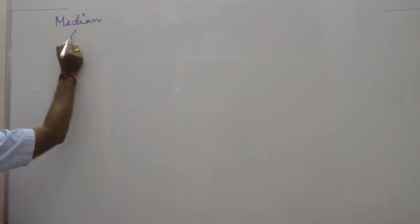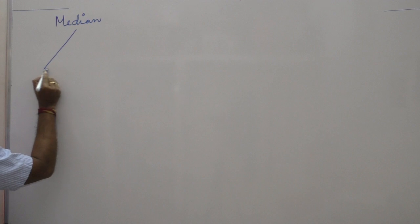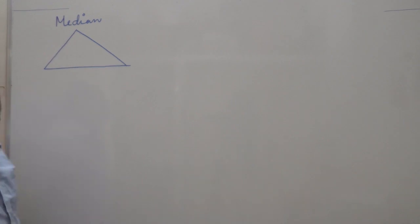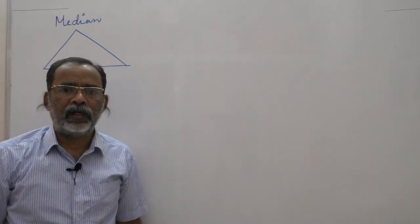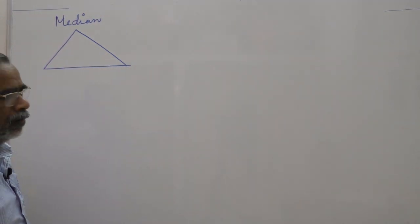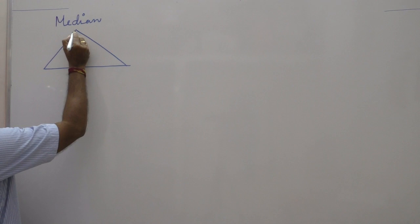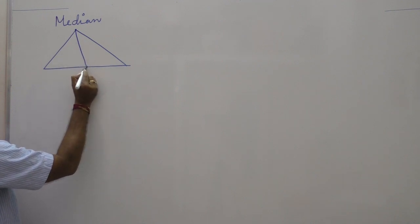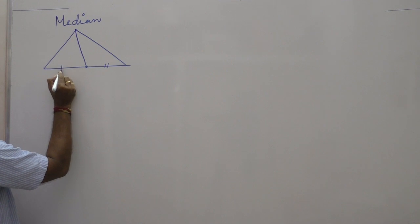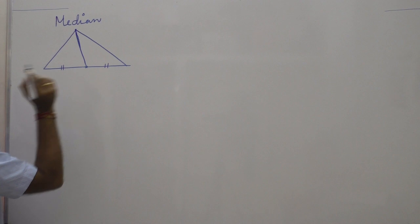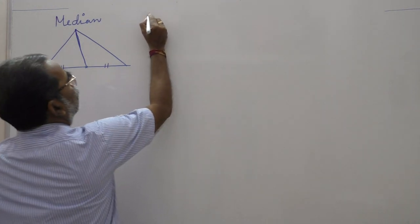A median — if you take a triangle with three sides, three vertices, and three angles, similarly there will be three medians. A median is a line joining one vertex to the midpoint of its opposite side. This line is called the median.